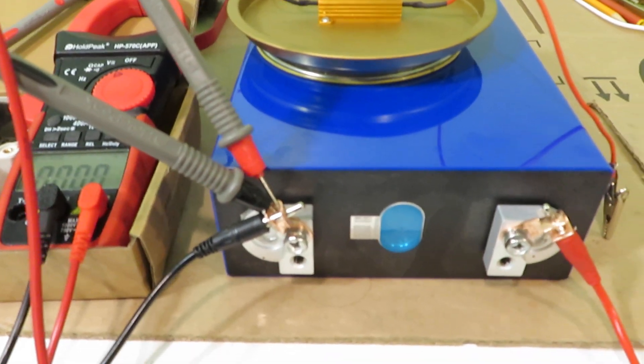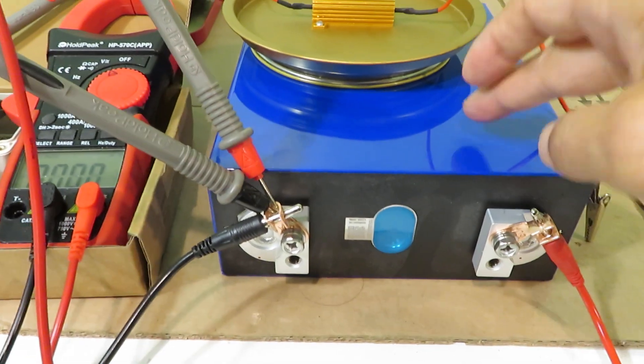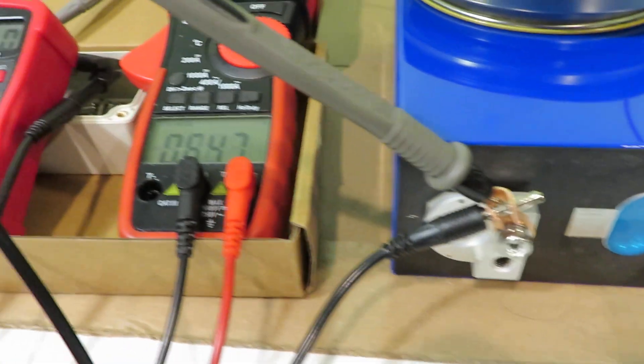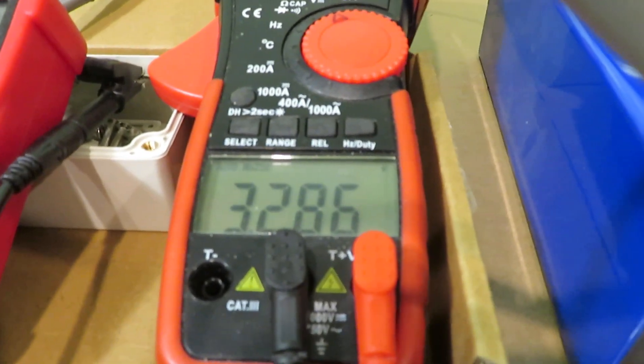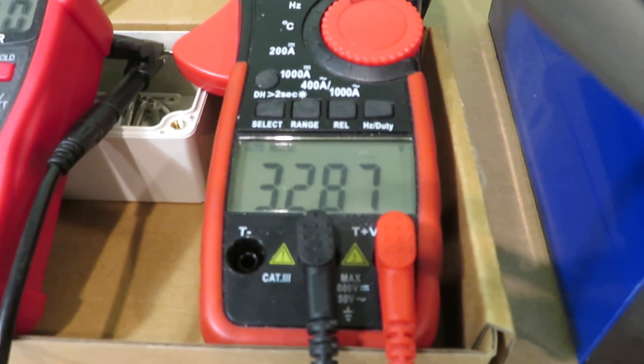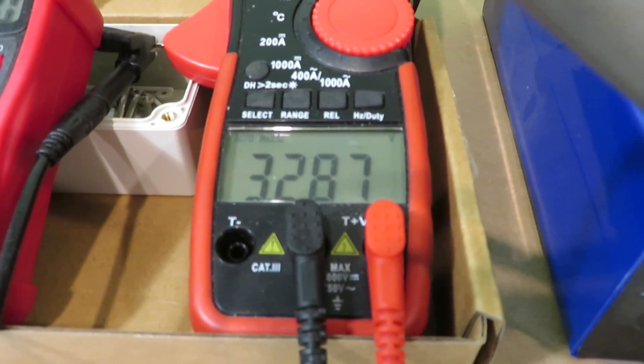So first of all let's measure the voltage of the LiFePO4 cell. If I measure the voltage, the cell is 3.287 volts.